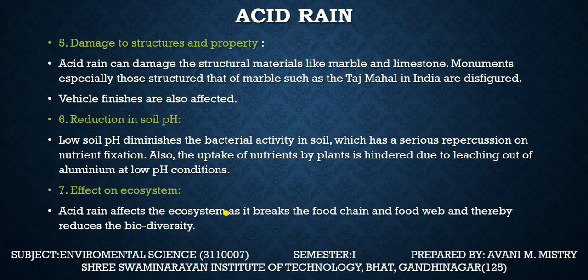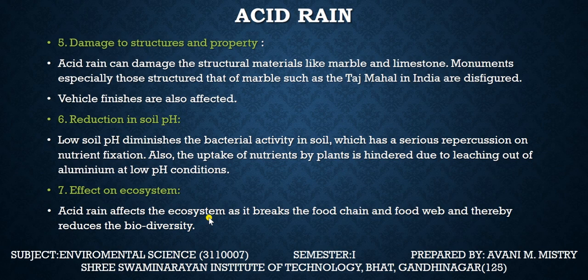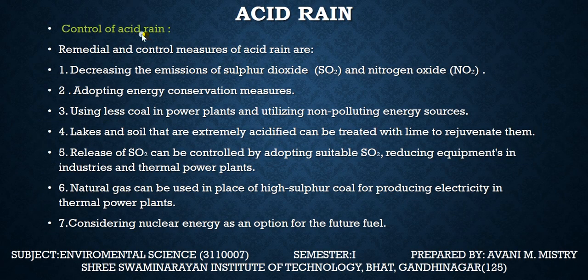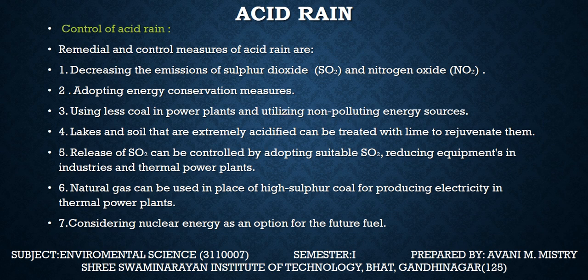Effect on ecosystem: acid rain affects the ecosystem as it breaks the food chain and food web, thereby reducing biodiversity — meaning species that depend on the food chain will diminish.